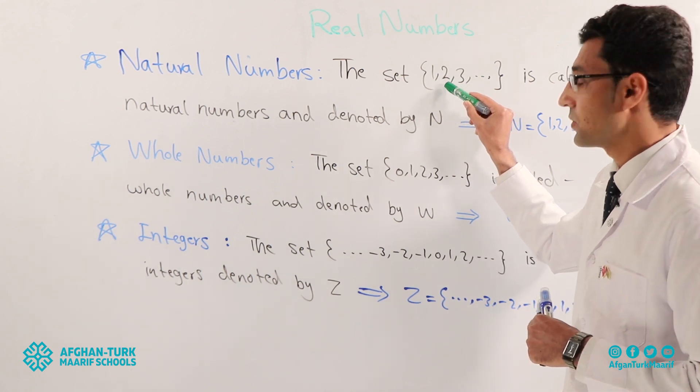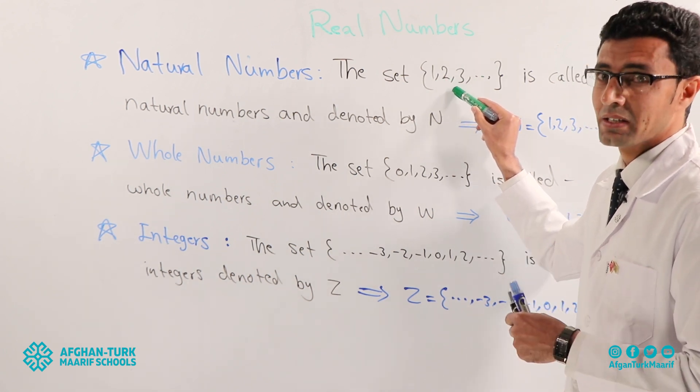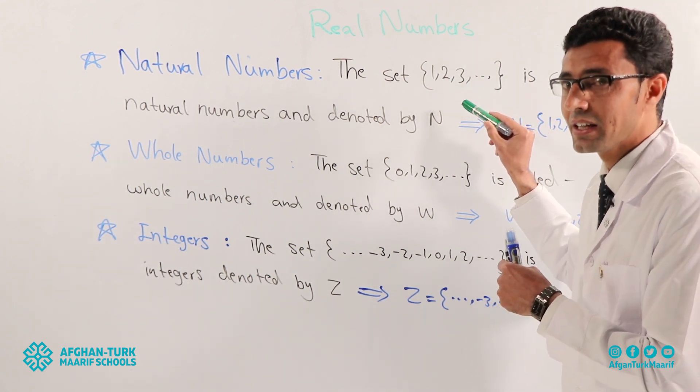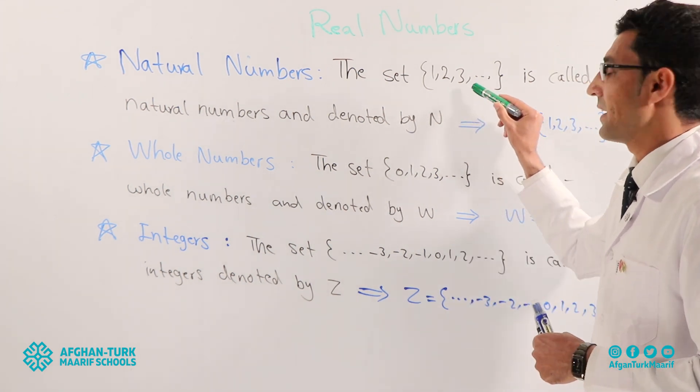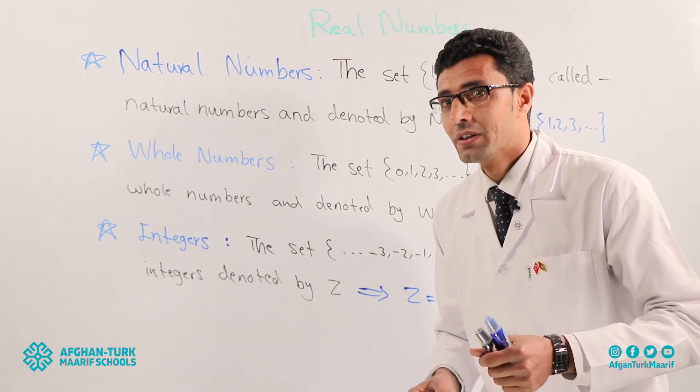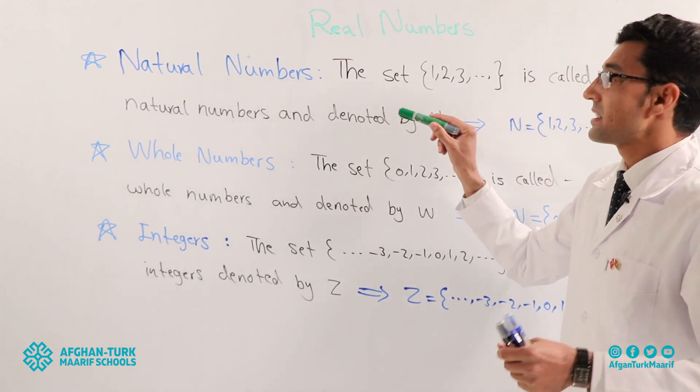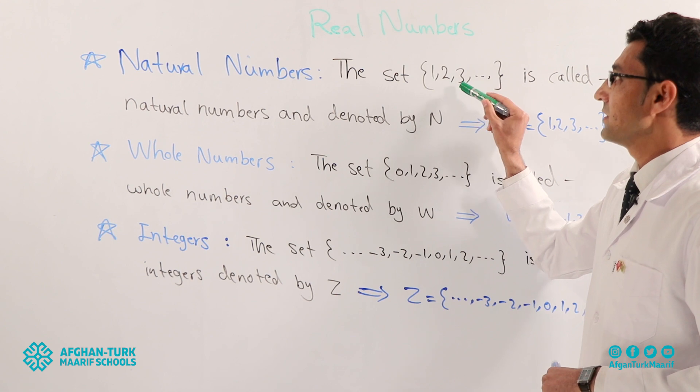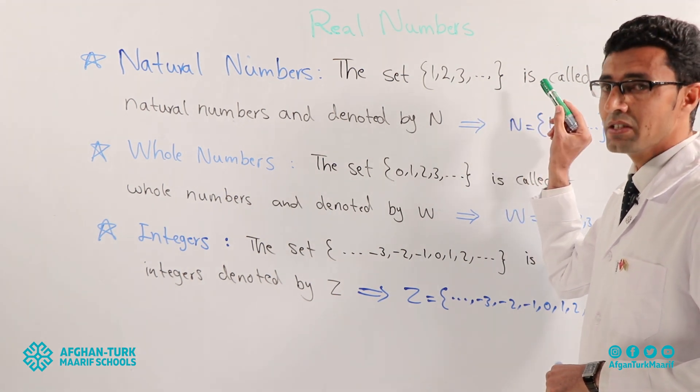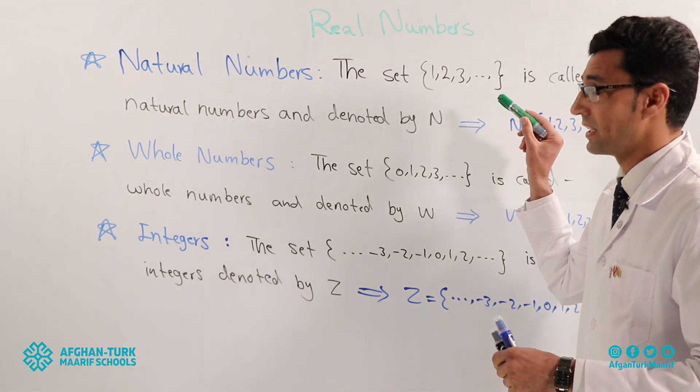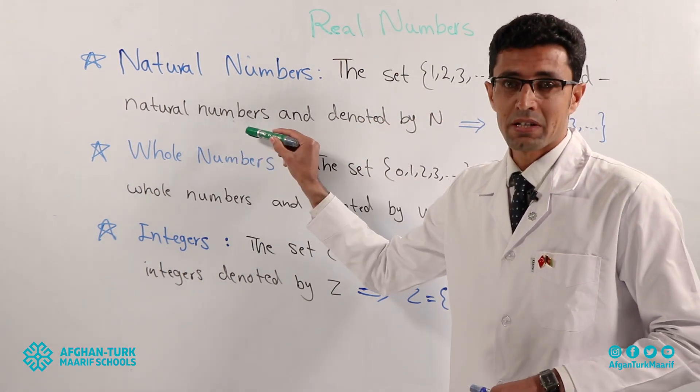Continue. Two. Three. And what is after three? Yes. After three it is four. What is after four? Five. Yeah. We continue like this. It means the set starts from one, two, three and continue till infinity. It's called natural numbers.